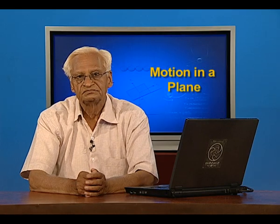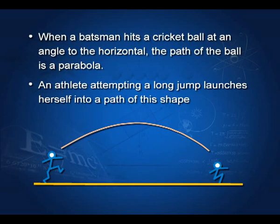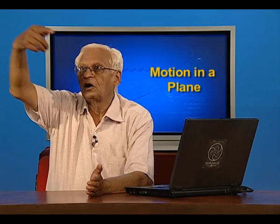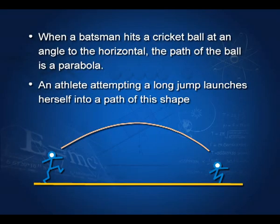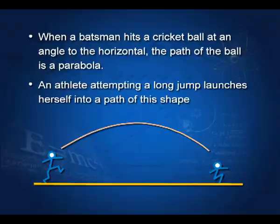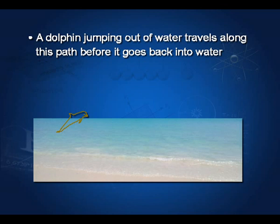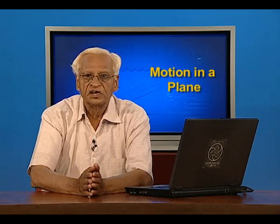Let me give you a few examples of this parabolic curve. You have a water tube and the water comes out — the path that the water describes is a parabola. When a batsman hits a cricket ball, the ball has a trajectory which is parabolic. An athlete attempting a long jump launches herself into a path of this shape. If you have been to a seaside, you must have seen dolphins jumping out of water — the path followed by a dolphin is also a parabola.